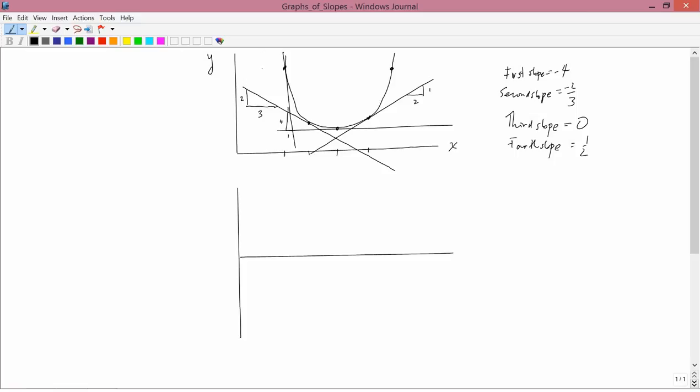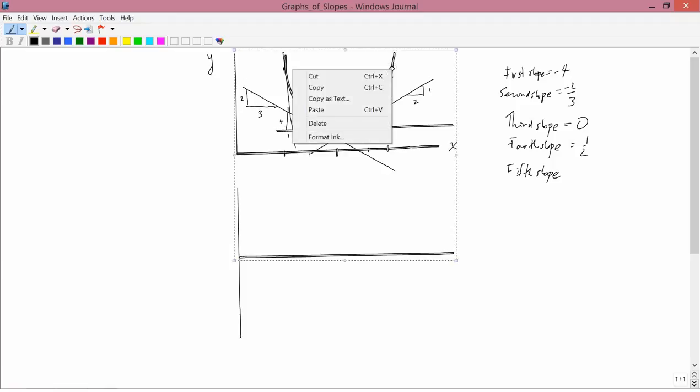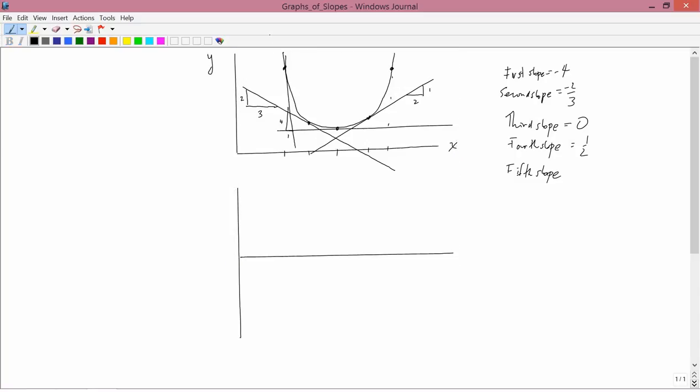Finally the fifth slope for this value of X. Draw that tangent line. I sometimes get unexpected results here because I'm pressing too hard on the stylus. That's roughly the tangent line. What is its slope? We do a rise over a run here. The rise is a lot bigger than the run. I'd say maybe it's three times bigger. So the fifth slope would be positive three.